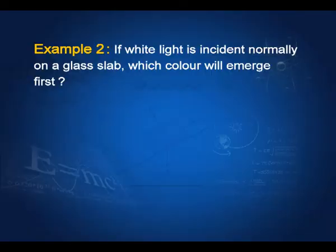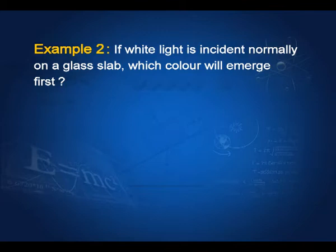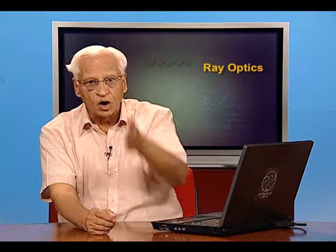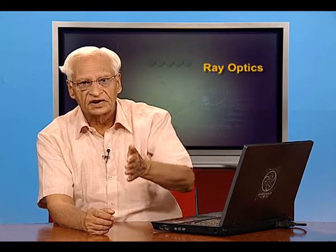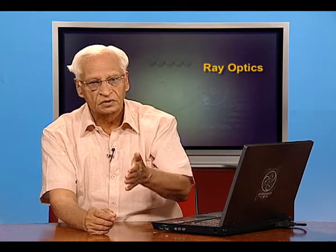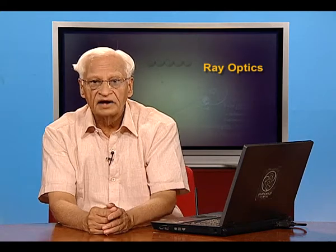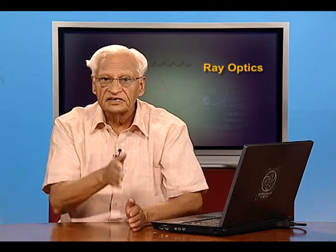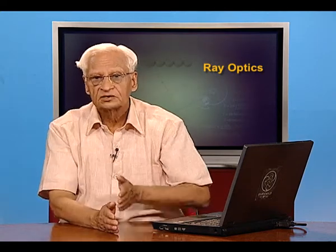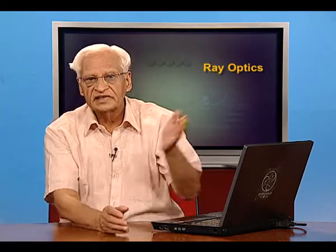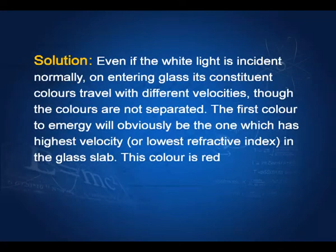However, we shall see that if instead of a slab we have a prism, the colors will separate. Example two: if white light is incident normally on a glass slab, which color will emerge first? The light is entering normally, so the angle of refraction is 0 for all colors. However, they travel with different speeds through glass, and the speed of red is maximum. Therefore, the red color will come out first.